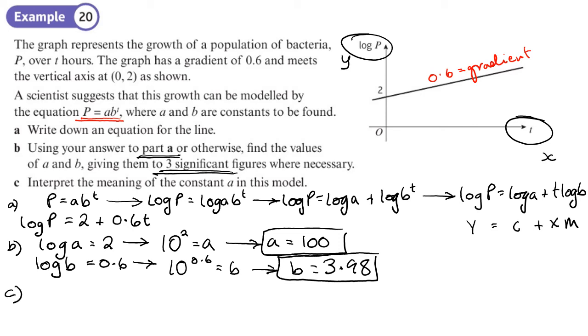Part C, interpret the value of the constant A in this model. Now the constant A came from the 2, didn't it? And that 2 is the value you get when T is equal to 0. That's what log A is. So A actually stands for exactly the same thing. It's the value of P when T is 0. So it's the value of P, which is the population. It's the population of the bacteria when T equals 0, so that's basically at the start. Right, you should now be able to do exercise 14H on pages 331 to 333.